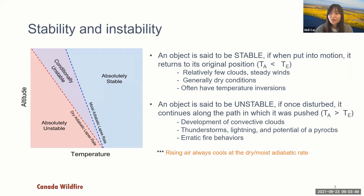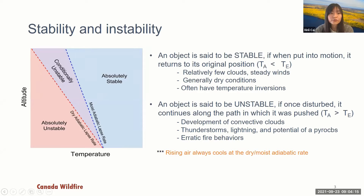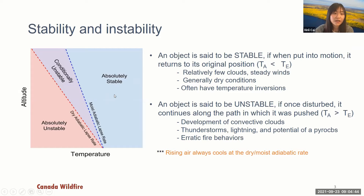As we all know, rising air will cool along either the dry adiabatic lapse rate or the moist adiabatic lapse rate. The dry adiabatic lapse rate is the rate at which unsaturated air cools when moving vertically. The moist adiabatic lapse rate is the rate at which saturated air cools when moving vertically. An object is said to be stable when, if put into motion, it will return to its original position.